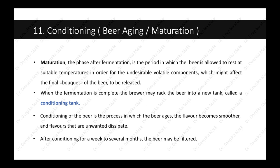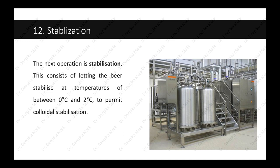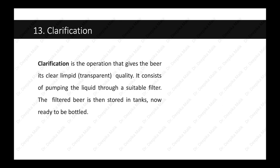The next operation is stabilization. This consists of letting the beer stabilize at temperatures of between 0 to 2 degrees Celsius to permit colloidal stabilization — that is, to allow the particles to remain suspended in solution at equilibrium. Further clarification is then done, which gives the beer its transparency — a clear, limpid appearance. It consists of pumping the liquid through a suitable filter. The filtered beer is then stored in tanks, ready to be bottled.